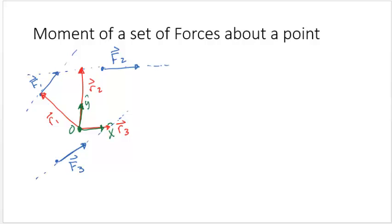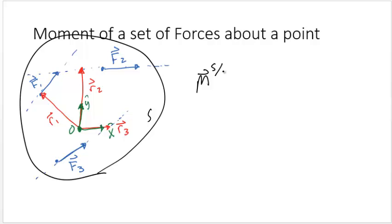Now that you're familiar with calculating moments from single forces, how do we calculate the moment about a point O when there are more than one force? The moment due to the set of forces in the system S about point O is the vector sum of the moment of the individual forces about point O.